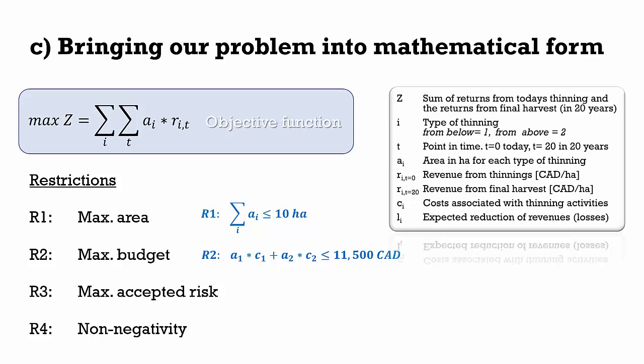Our third restriction is related to the maximum acceptable risk. The forest owner is willing to accept a total in losses of 13,000 Canadian dollars. We multiply the losses of each thinning type by the area assigned to it, add the two together, and ensure that it is always less than or equal to 13,000 dollars. With our last restriction we formulate non-negativity: our decision variables — such as area size — can never be negative, so they must always be greater than or equal to zero.